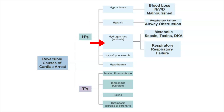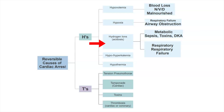The third H is hydrogen ions or acidosis. This can be either respiratory acidosis or metabolic. Think about diagnoses like respiratory failure, sepsis, toxins, and DKA. For this patient, you're also going to want to request an ABG to determine if it's respiratory or metabolic. If it's metabolic, we want to reverse whatever caused it. For respiratory, we want to give them bicarb to correct the acidosis.